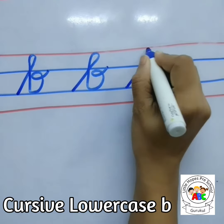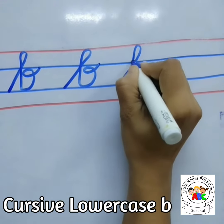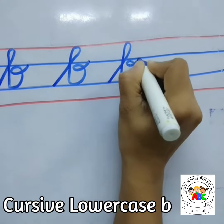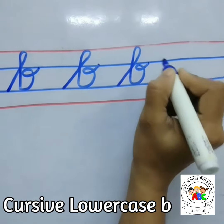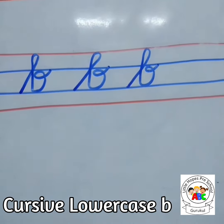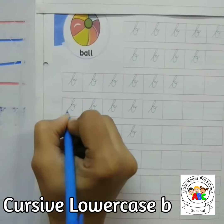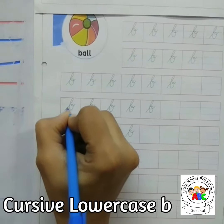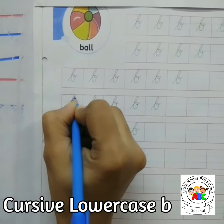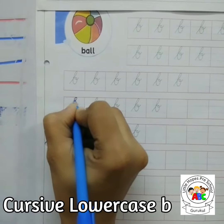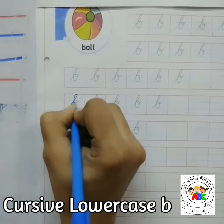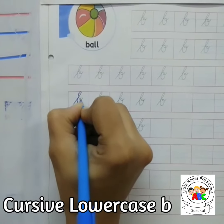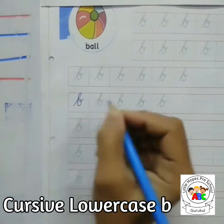Yes kids, we are going to write it like this. Now I will write it on the worksheet for you. We have to start from the second blue line, a slanting line, then a standing line and then we are going to put a curve.